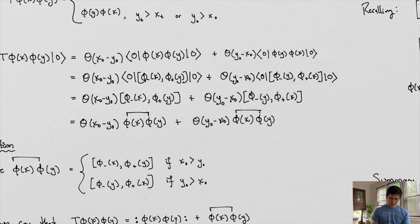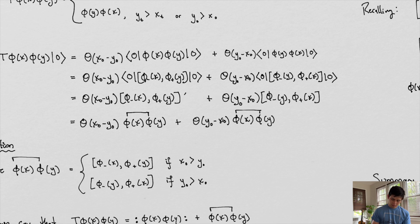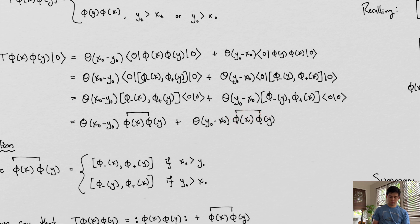We do the same thing here and take the states out, because this here is just an operator that can be taken out. So what I'm doing here essentially gives us this result. And this quantity right here — this is called the contraction of two fields. We define the contraction of two fields to be equal to this.